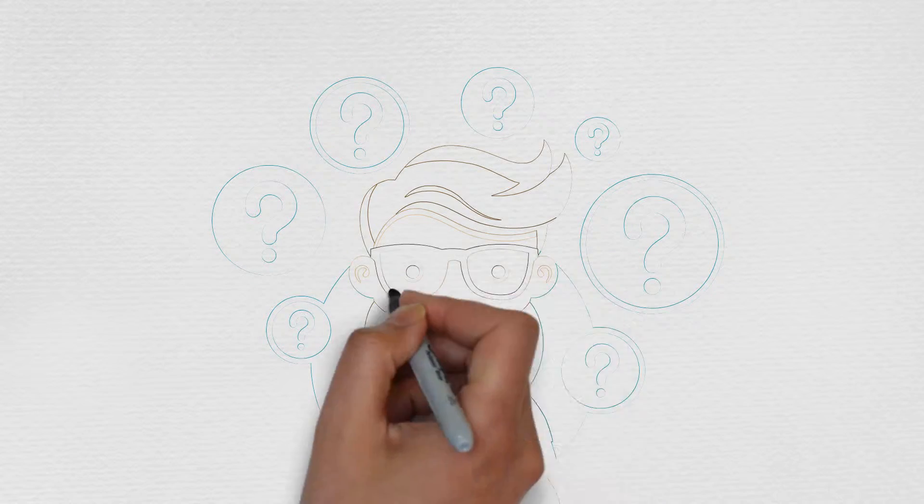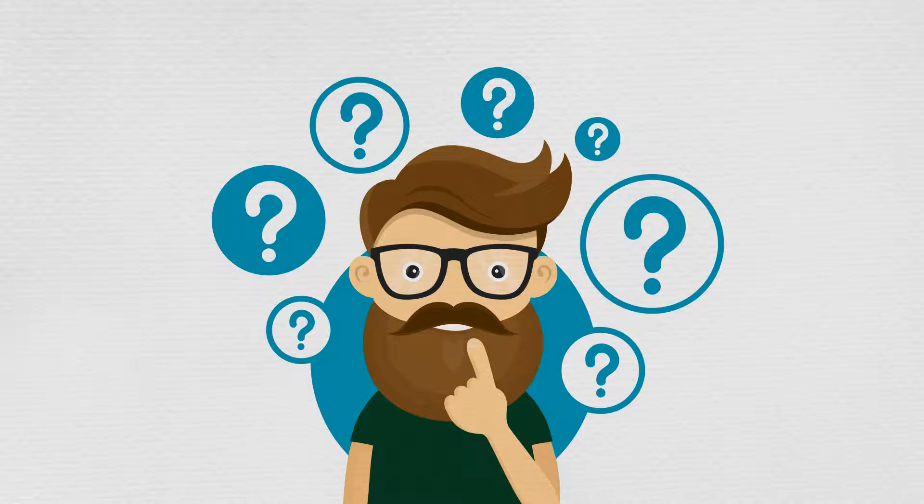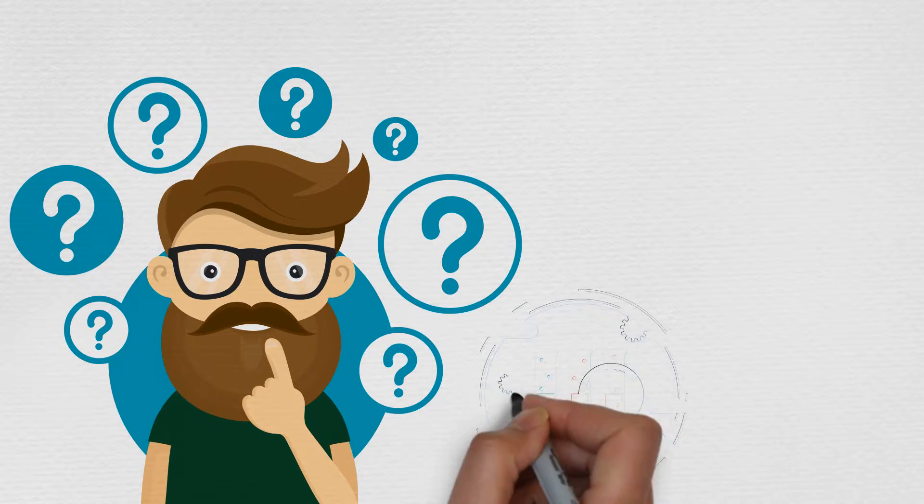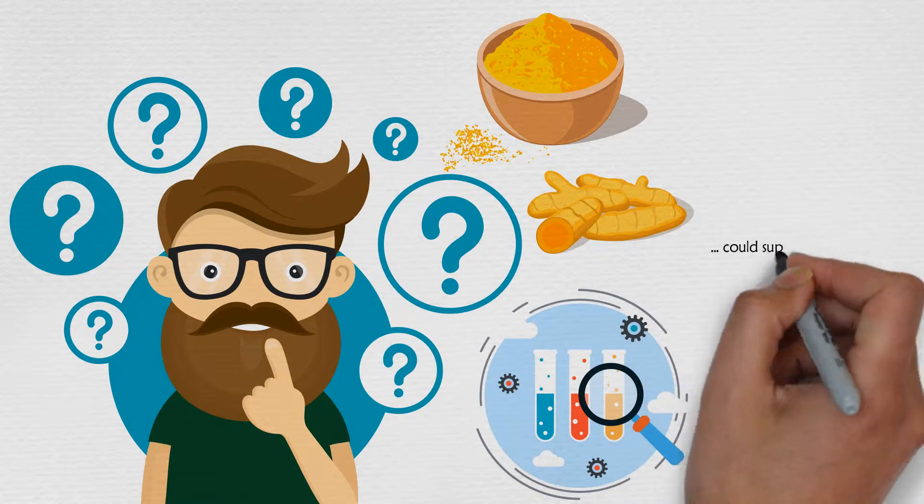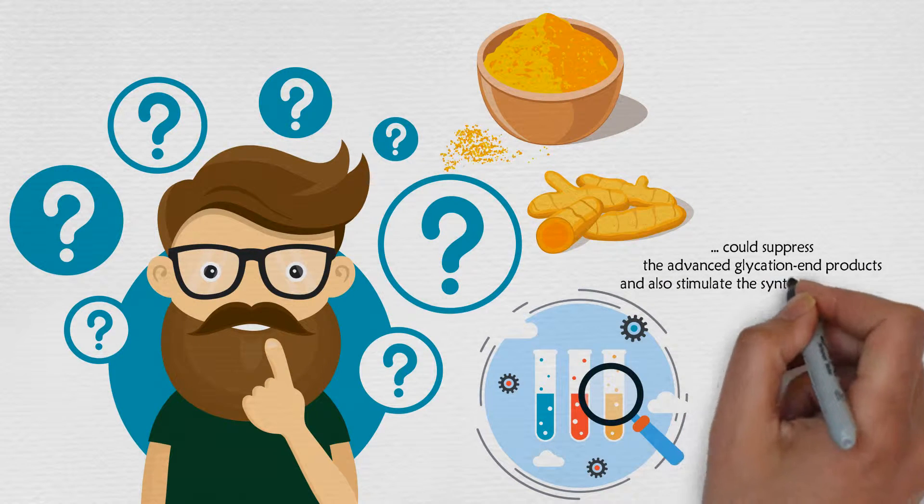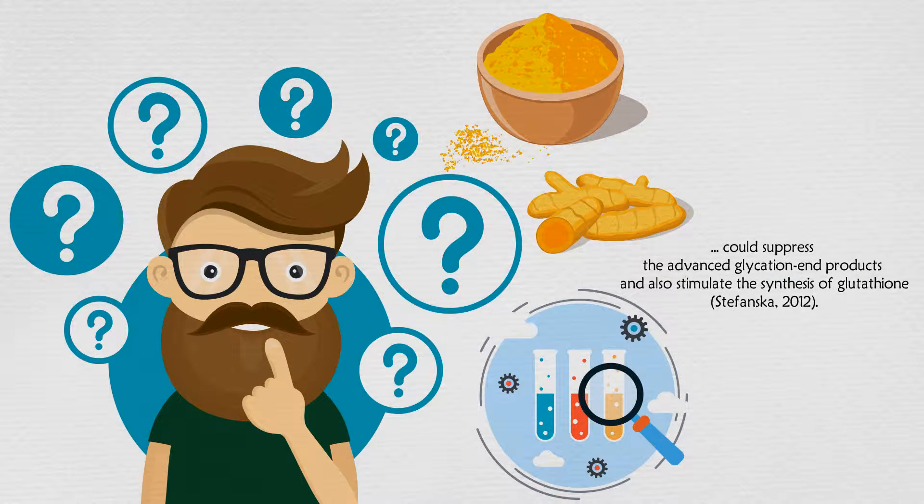So what can be done to offset the production of these advanced glycation end products? The researchers of this study show that curcumin could suppress the advanced glycation end products and also stimulate the synthesis of glutathione.